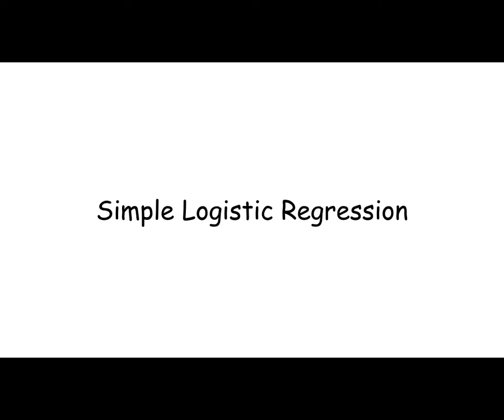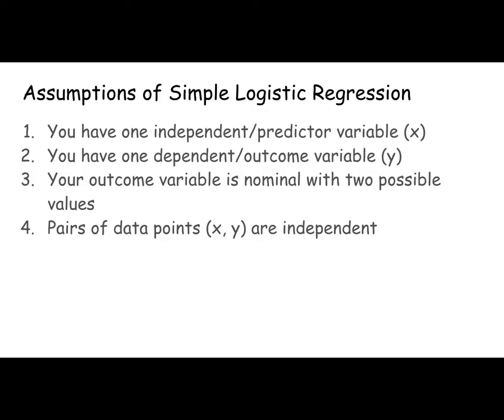Simple logistic regression makes use of a single predictor variable and a single outcome variable. Just like simple linear regression, you've got one independent or predictor variable and one dependent or outcome variable. But your outcome variable in this case has just two possible values: yes or no, success or failure, high or low, whatever it is. You've got two possible outcomes.